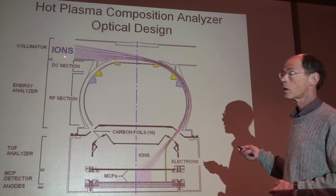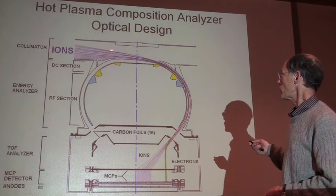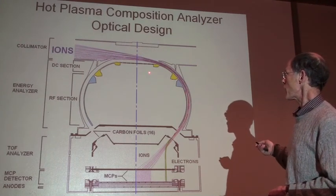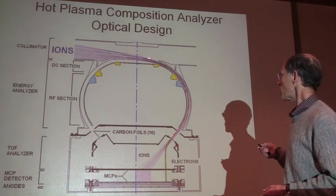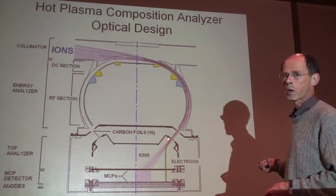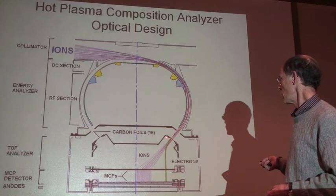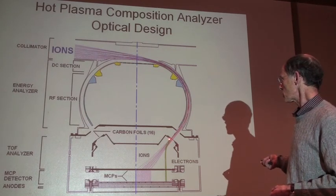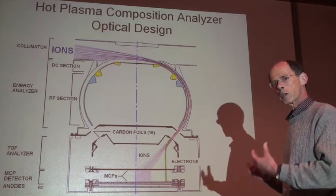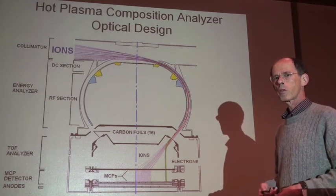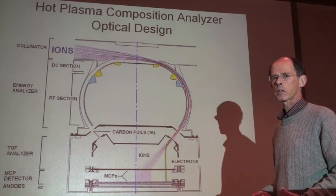Ions are entering from the left during reconnection. They're going through the analyzer here, and their trajectories are governed by electric fields, which determine what energy of ion is passed through and the angle of the ion. Once they get through there, they enter a time-of-flight region, and here we measure the velocity of the ions. Since we know their energy and their velocity, we can compute the mass per charge of the ions very easily.